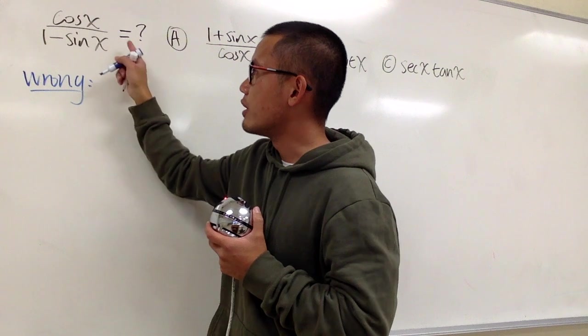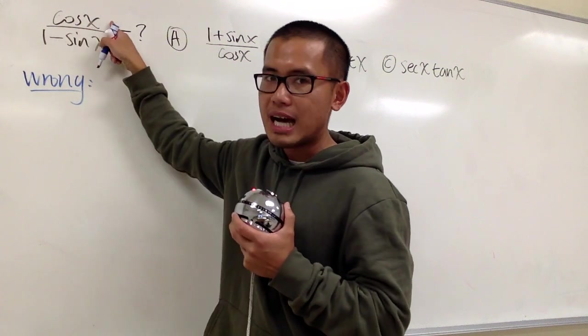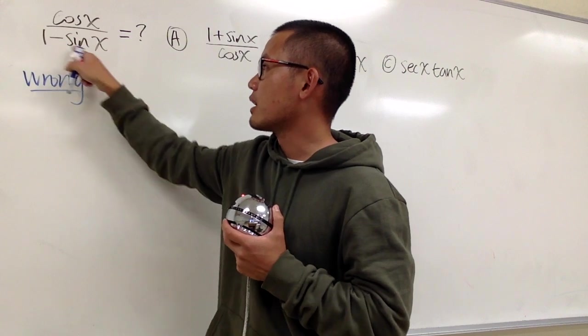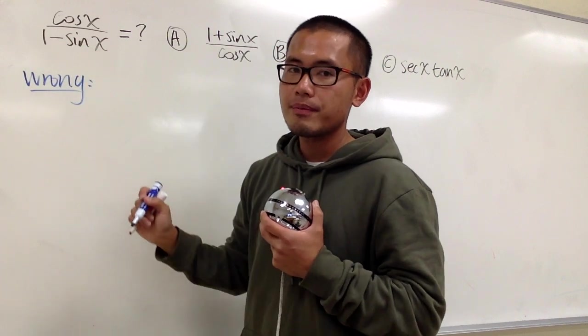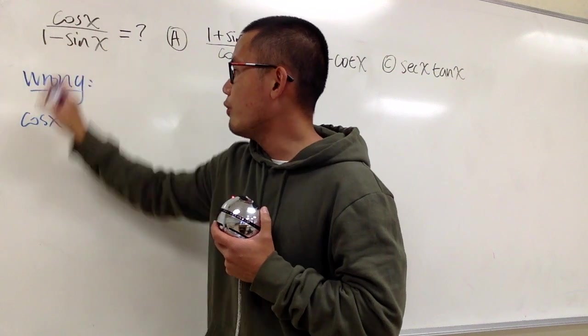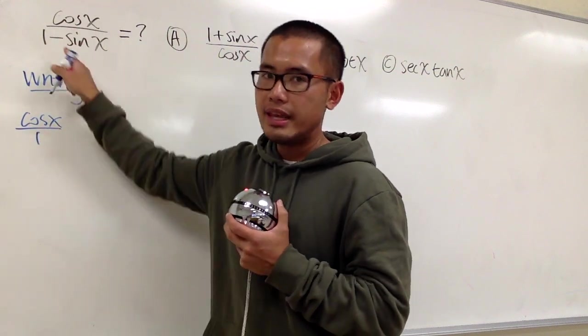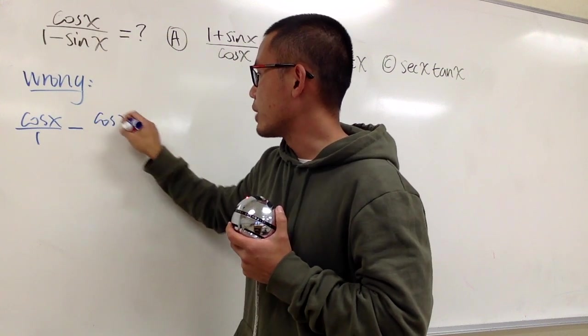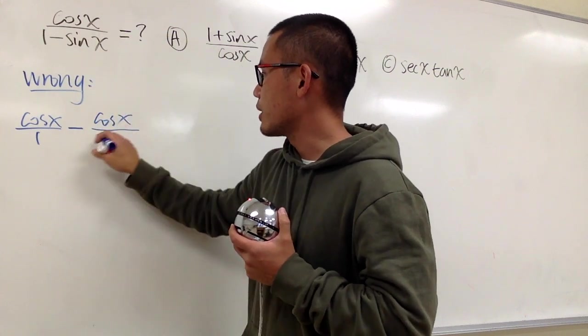Well, if you look at this right here, yes, we do have a cosine x on the top, and we have two things on the bottom, namely the 1, and then we subtract the sine x. If you just go ahead and put down cosine x over this 1, and then put the minus in between, and then still put down cosine x over the sine x right here.